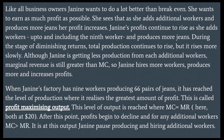Like all business owners, Janine wants to do better than breakeven — she wants to earn as much profit as possible. As she adds additional workers and produces more jeans, profit increases. Janine's profit continues to rise as she adds workers up to and including the ninth worker. During the stage of diminishing returns, total production continues to rise but more slowly. Although Janine is getting less production from each additional worker, marginal revenue is still greater than MC, so she hires more workers, produces more, and increases profits. When Janine's factory has nine workers producing 66 pairs of jeans, it has reached the level of production where it realizes the greatest amount of profit. This is called profit maximizing output, reached where MC equals MR — here both at $1.20.